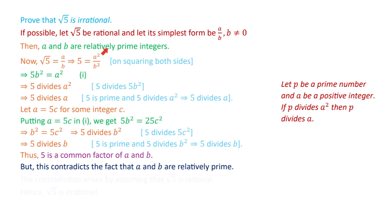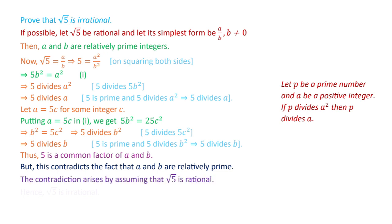The contradiction arising here is that we have a common factor 5 of a and b, but this is not possible since we assumed a and b are relatively prime. So this contradiction arises because we assumed that square root 5 is a rational number. We cannot suppose this, so we obtain that square root 5 is an irrational number.